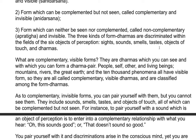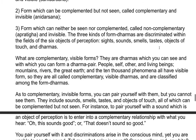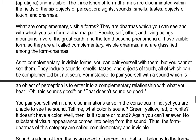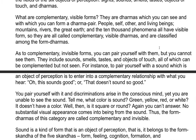The three kinds of form dharmas are discriminated within the fields of the six objects of perception: signs, sounds, smells, tastes, objects of touch, and dharmas. The complementary visible forms are dharmas which you can see and with which you can form a pair — people, self, others, and living beings; mountains, rivers, and great earth. The ten thousand phenomena all have visible forms.